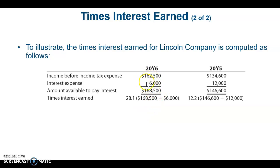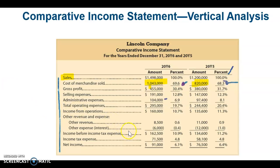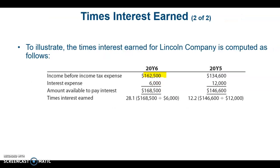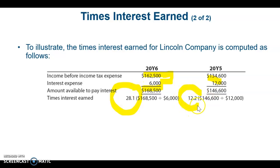Here is the calculation: income before income tax expense is 162.5 for 2016 and 134.6 for 2015. Interest expense is also on the income statement. Adding back interest expense gives 168.5 for 2016, then dividing by interest expense gives the times interest earned ratio. The 2016 result is higher than 2015, which is good — the higher the ratio, the more likely we can pay interest expense even if earnings decrease. Compare to the industry average as well.